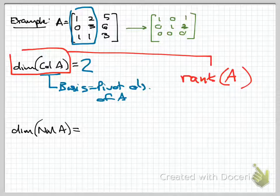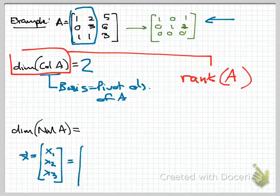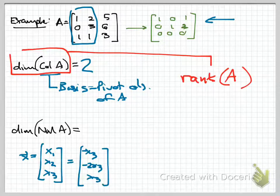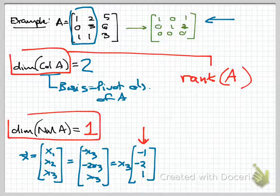Now, what is the dimension of the null space? We find the solution to Ax equals 0. From the reduced row echelon form, x3 is free, x1 equals negative x3, and x2 equals negative 2x3. This gives the solution x3 times the vector (-1, -2, 1). That numerical vector forms the basis for the null space of A. There is only one such vector, so the dimension of the null space is 1.